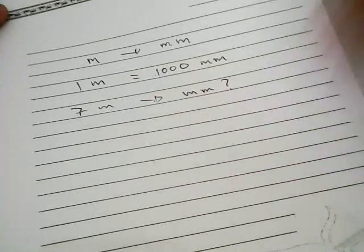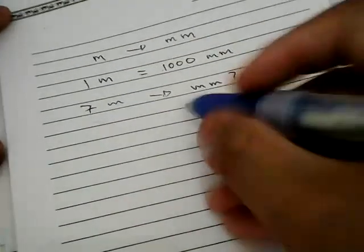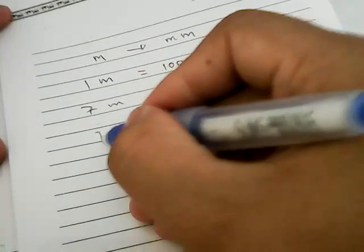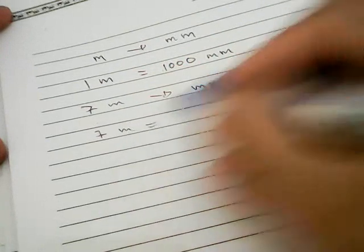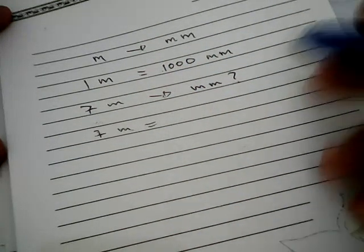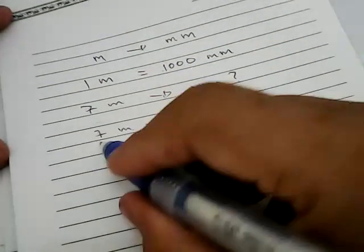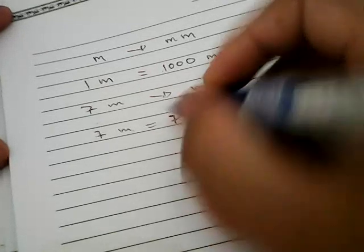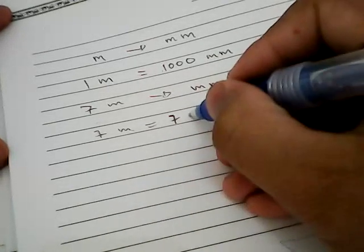Well, to solve this problem you need to write this 7 meter again and give it an equation mark. It equals to, then you need to write this 7 again over here and need to multiply the 7 with 1000.